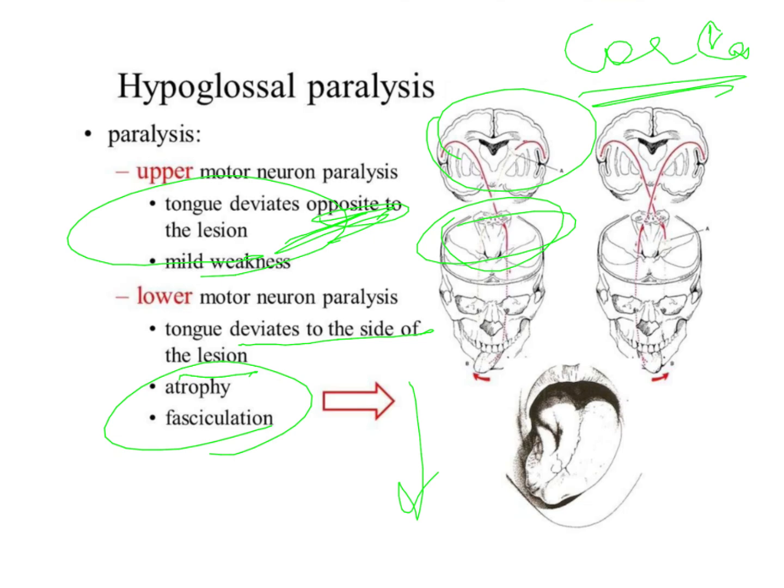If it is an upper motor neuron paralysis and you have a right side paralysis, the entire tongue will shift to the left side. So, this is something that you need to remember. It is not going to be asked for practical purposes — you always remember that it moves to the same side. However, if the question is very specific as to upper motor or lower motor neuron, then you have to select the right answer.